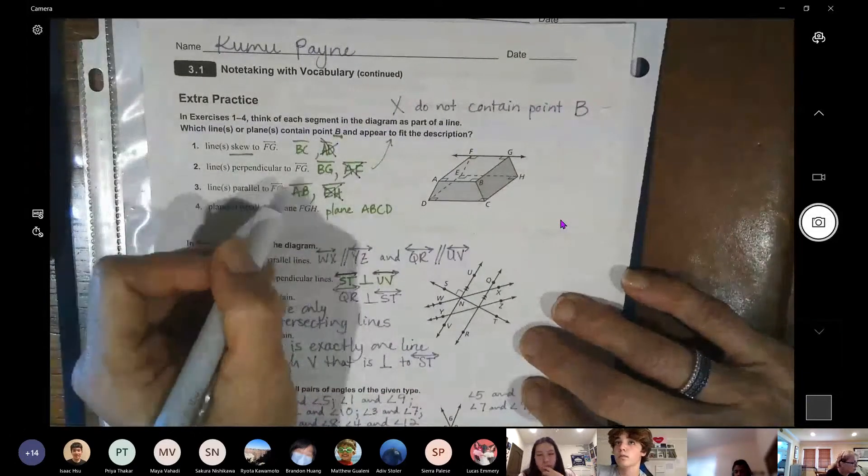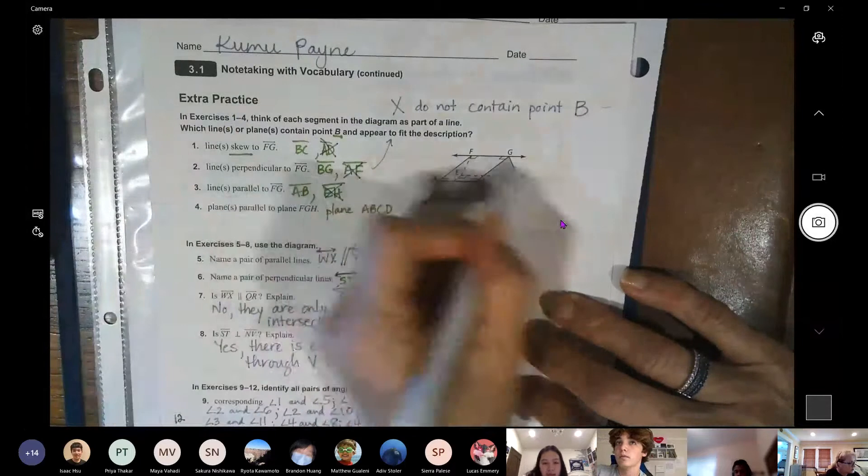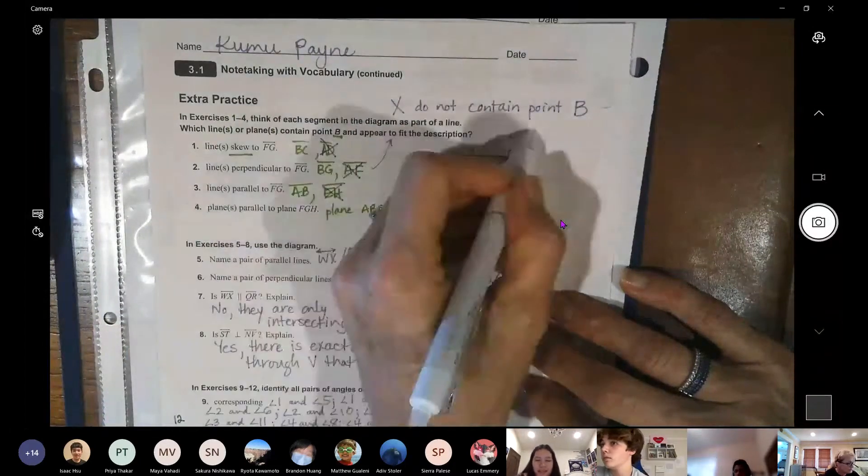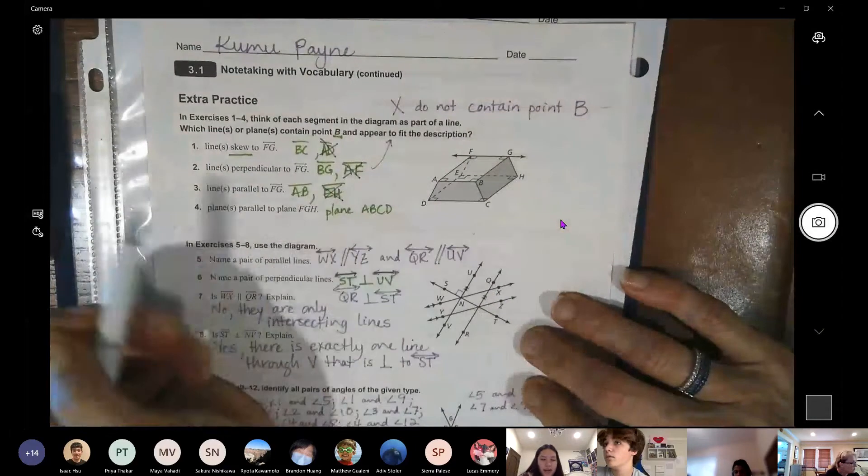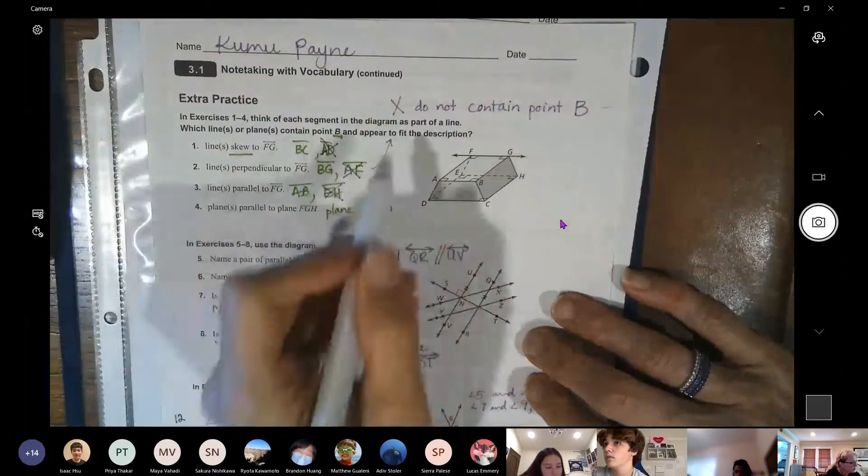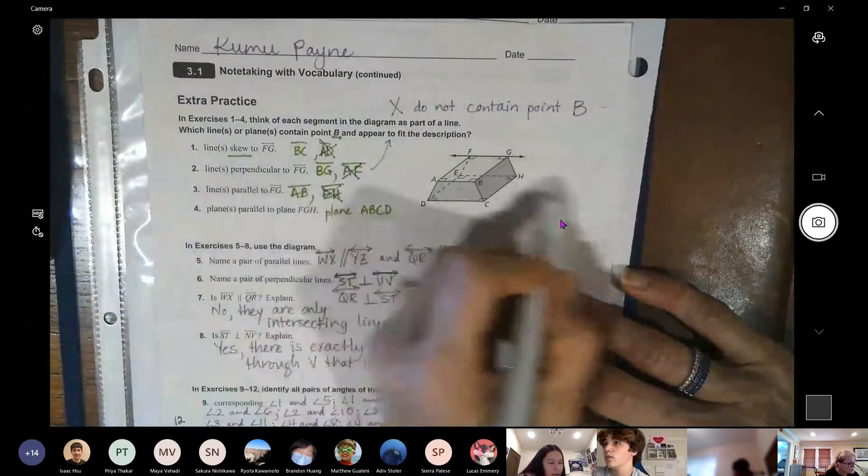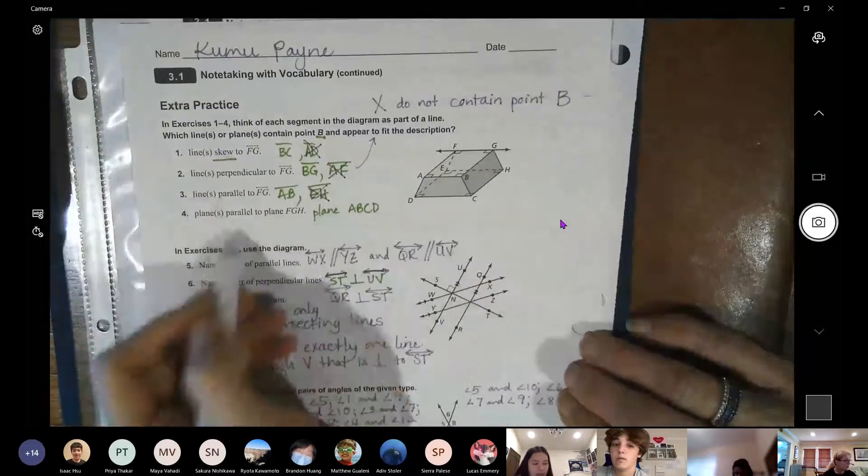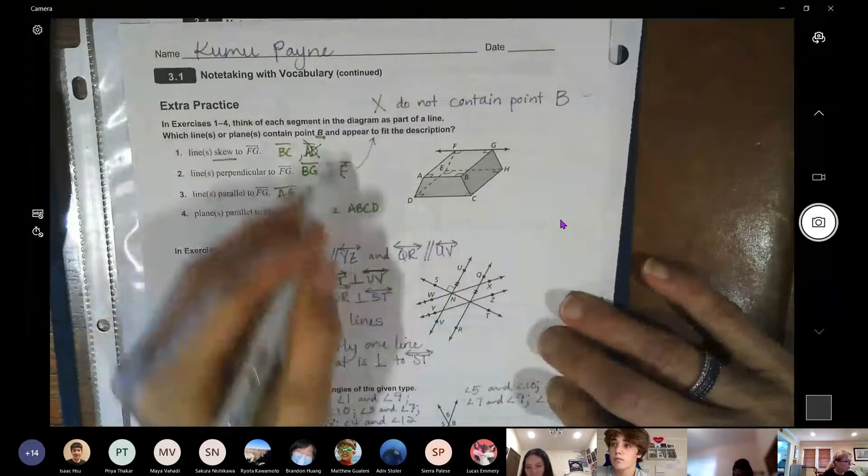Lines perpendicular. Perpendicular means those two signs. So I wrote AF and BG. And then lines parallel to FG, I wrote this one down here HE and AB up here. And plane ABCD. Well, after this section.